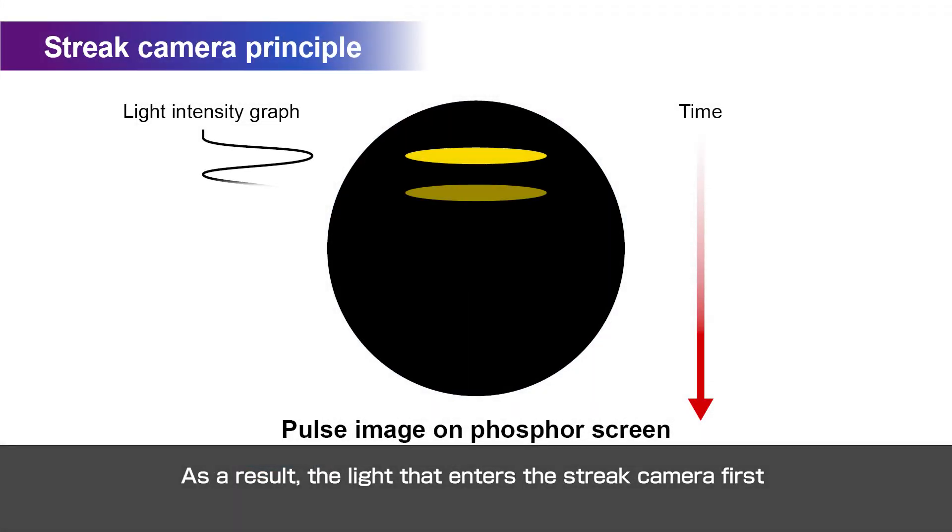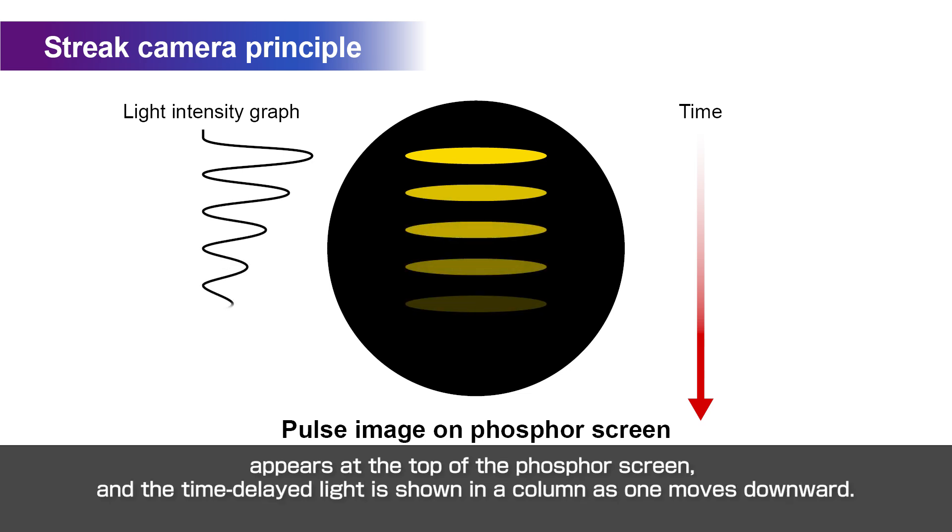As a result, the light that enters the streak camera first appears at the top of the phosphor screen, and the time-delayed light is shown in a column as one moves downward.